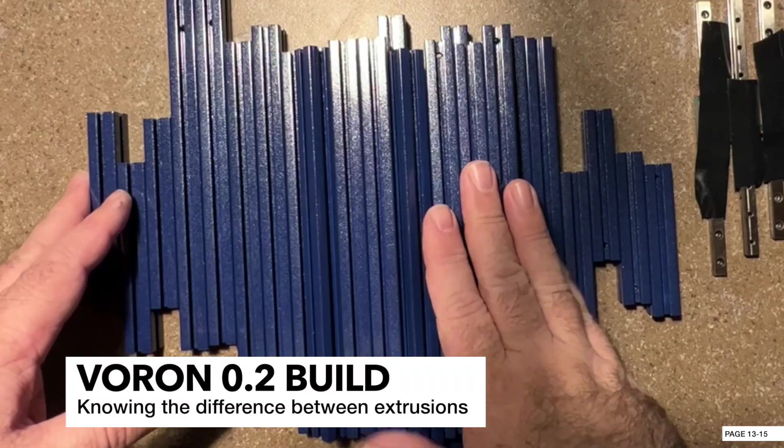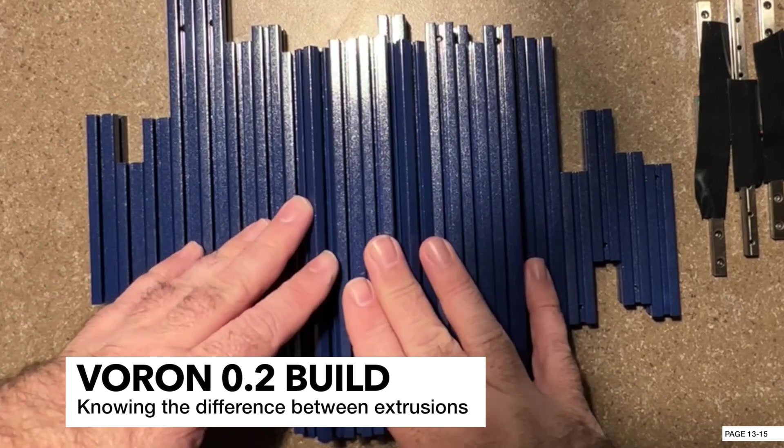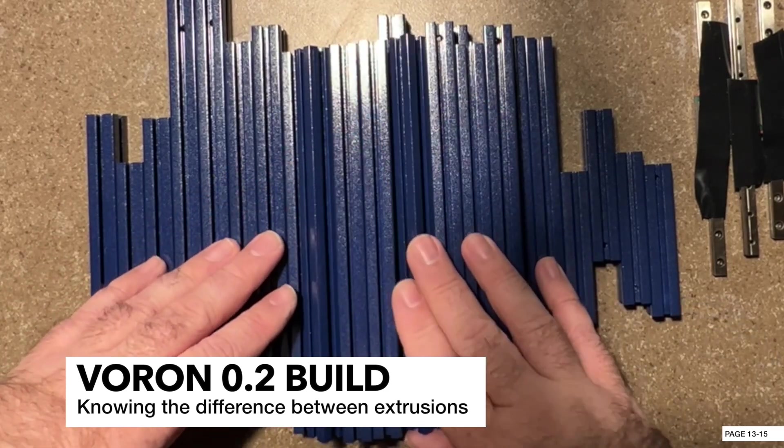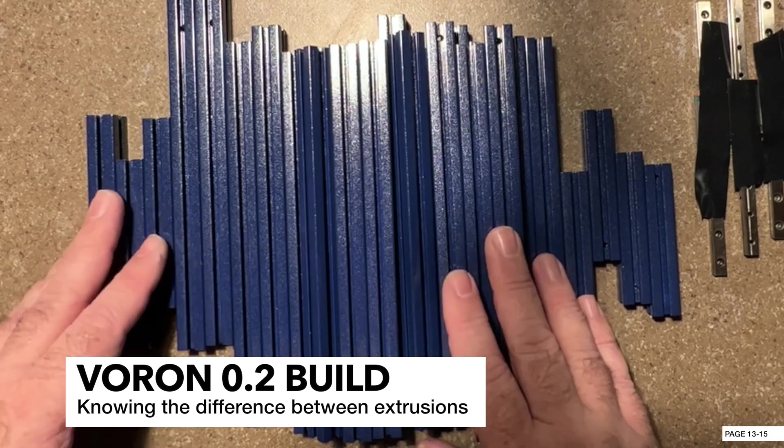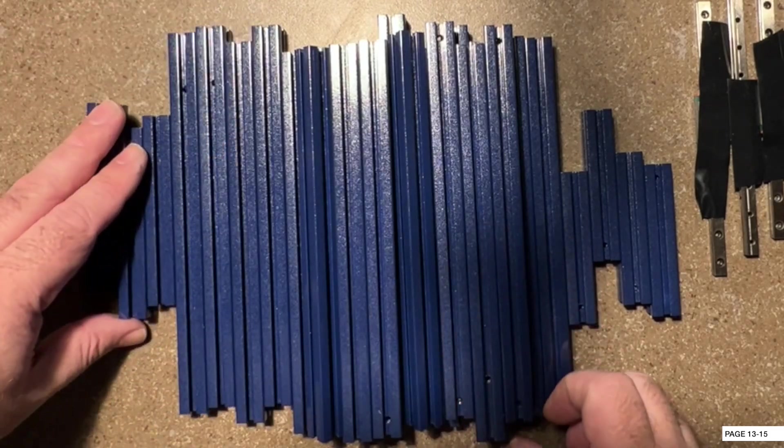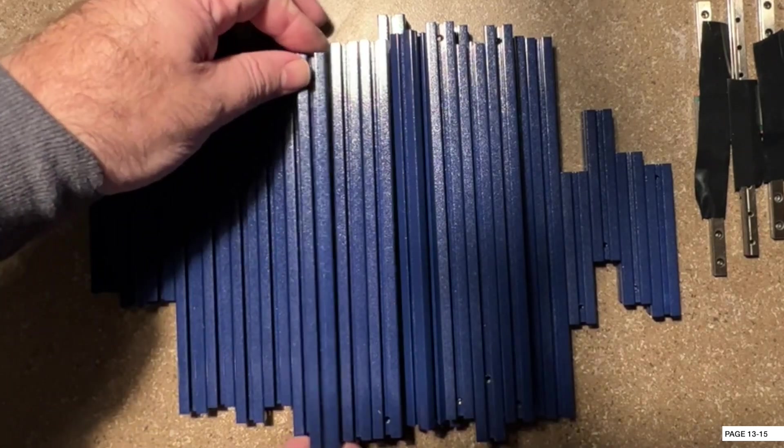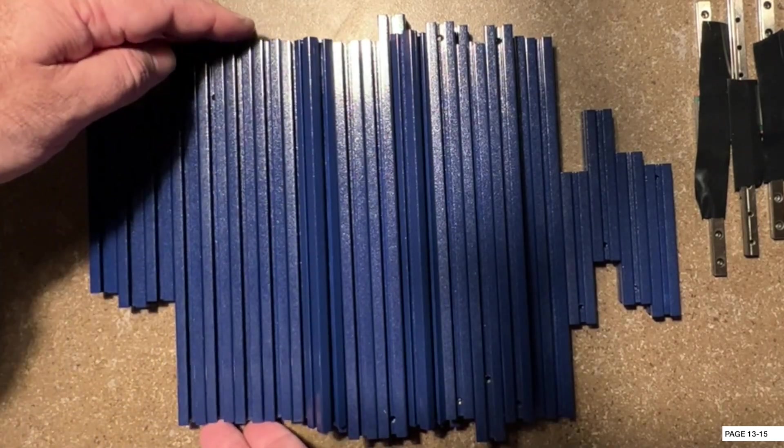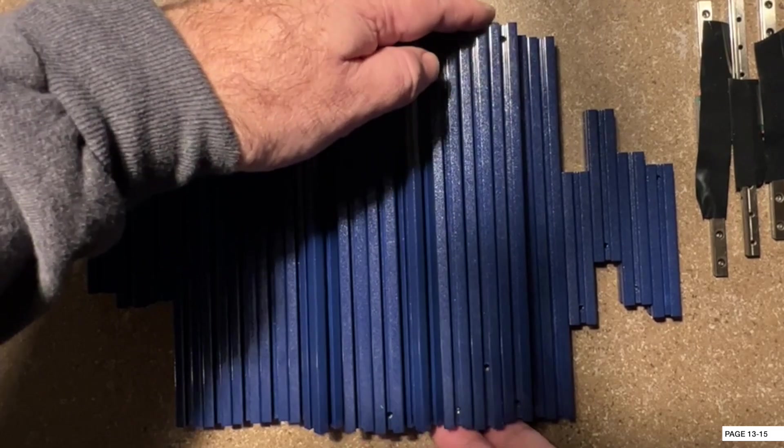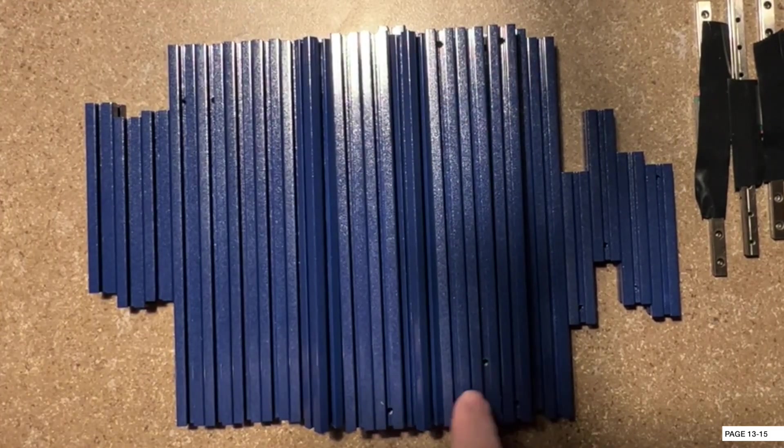Next up we're going to be populating the extrusions with the rail carriers we built previously. Now this is important to know, especially if this is your first build. There are a lot of different types of extrusions, but 90% of them are all the same length. Some of the key differences are holes in them.